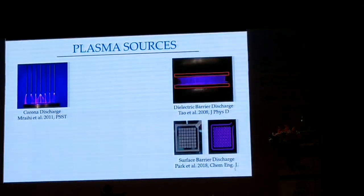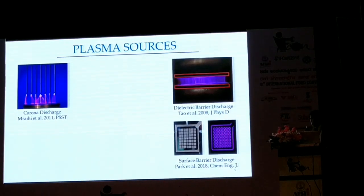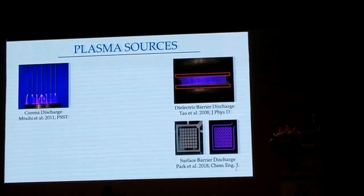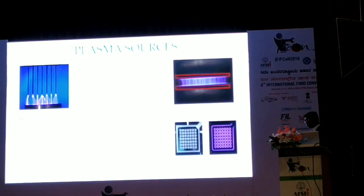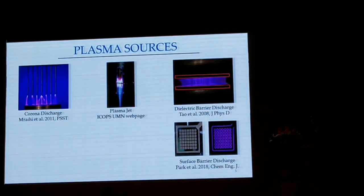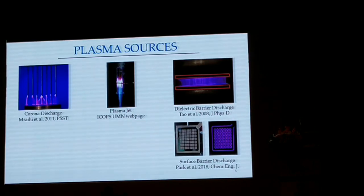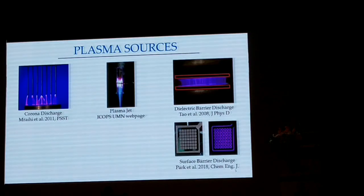You can also generate a surface barrier discharge by shifting the electrodes and letting them connect through the dielectric, so the discharge jumps from one end of the electrode to the other. These were most commonly used in the aircraft industry and more recently brought in for medical and food applications. If you take the dielectric barrier discharge and give it a 90-degree turn, it becomes a jet - you can localize the ionized gas coming out, which is very suitable for medical applications like wound healing or cancer treatment.